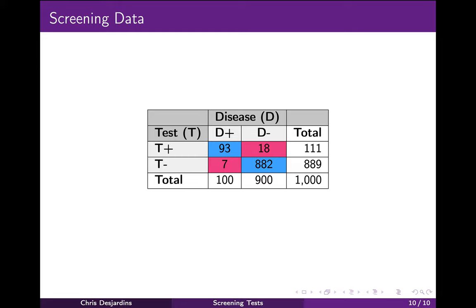One final note. Remember that prevalence and test characteristics like sensitivity, specificity, PPV, and NPV are all just proportions. Therefore, as we have seen before, the proportion observed in a given study sample is only an estimate of the true population proportion. The sensitivity observed in a given study is an estimate of the true test sensitivity. Furthermore, the results from a particular study can only be generalized to the population of interest if the sample was representative of the population.